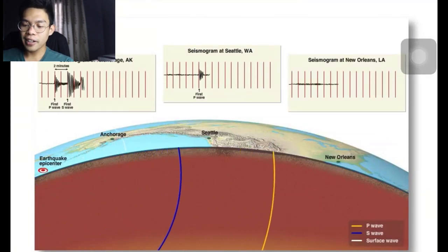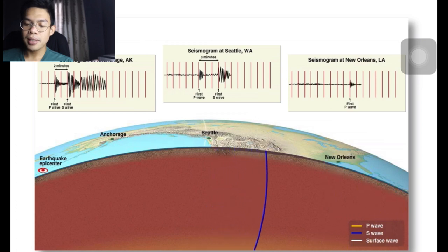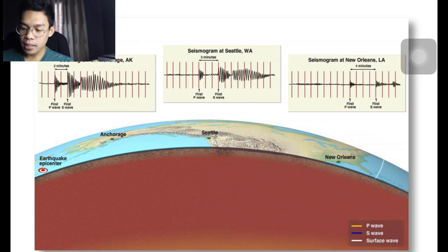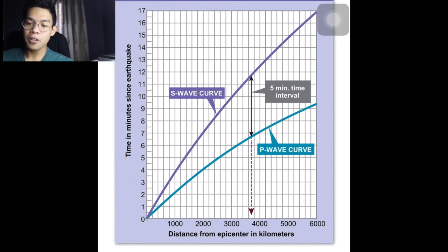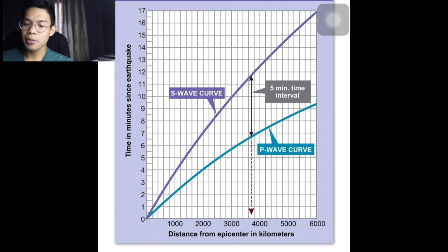Seismologists observe the difference in velocities between P waves and S waves recorded in seismograms. The farther the recording station is from the focus, the greater the difference in arrival times. From many seismograms, a travel time graph is plotted to determine the distance to an earthquake's epicenter. A difference in arrival times of the first P and S waves of 5 minutes corresponds to a distance of 3,700 kilometers from the epicenter.